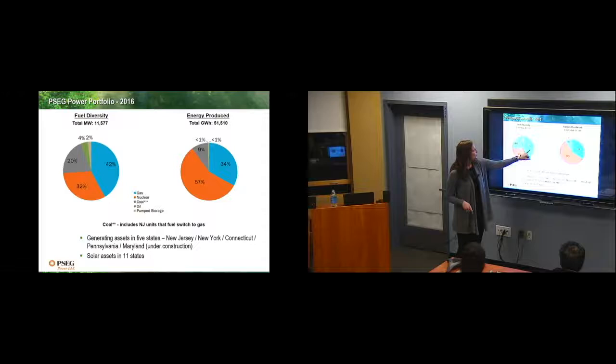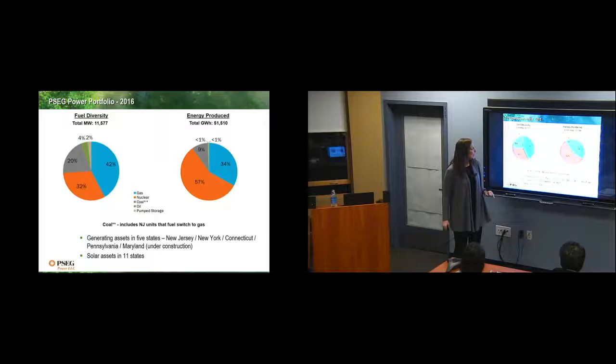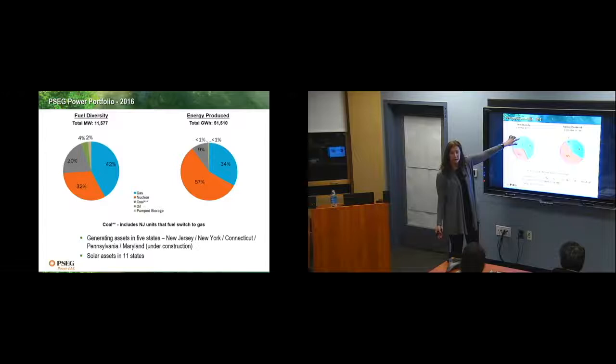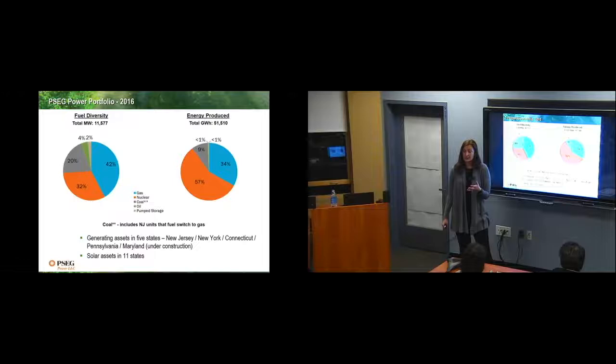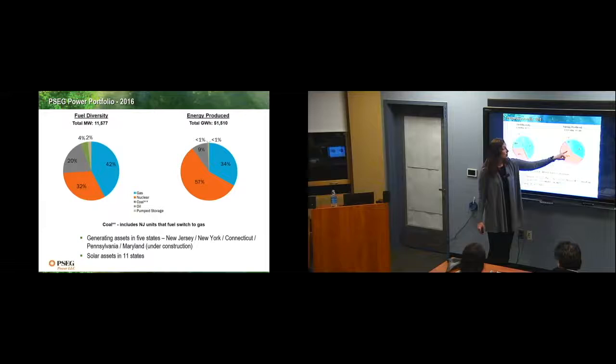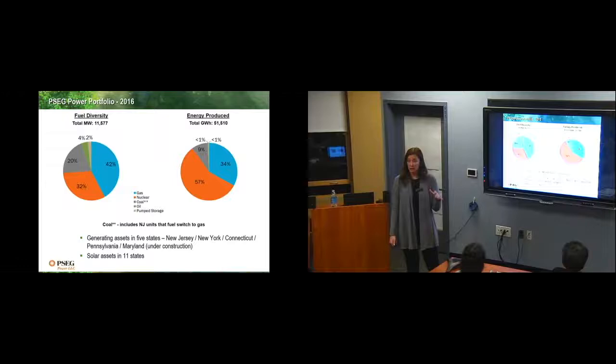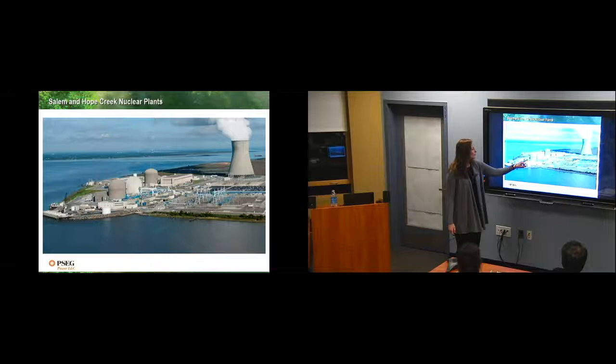So our company, this is what our fuel diversity, if we ran everything full speed, we're mostly gas, a lot of nuclear, and then still some coal, which again is switching over to natural gas. This is what we actually produced in 2016. In 2017, we had an amazing year with nuclear, so we actually were over 60% for the first time in our company history. So nuclear is a very big part of our company because we run so efficiently and nonstop.